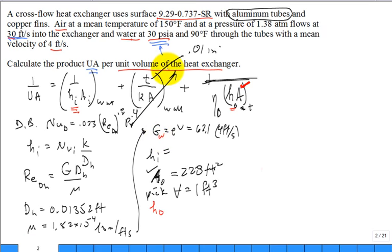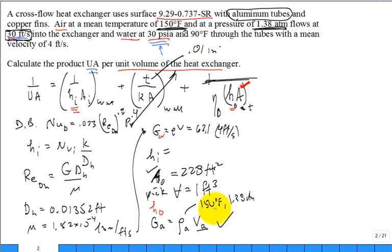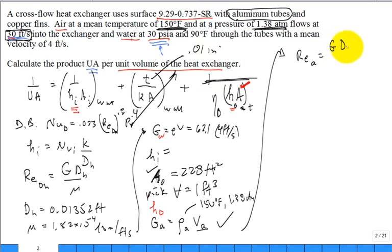For the air side, G_air = ρ_air × V_air = density at 150°F and 1.38 atm, times 30 ft/s. Once I have G_air, I calculate Re = G·D_H/μ, using the air-side hydraulic diameter from the illustration.